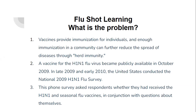So what is flu shot learning? What is the problem? In our dataset, we will take a look at vaccination, a key public health measure used to fight the effect. Vaccines provide immunization for individuals and peoples, and enough immunization in a community can further reduce the spread of diseases through herd immunity. When a vaccine for the H1N1 flu virus became publicly available, the United States conducted a national H1N1 flu survey. Respondents were asked whether they had received the H1N1 and seasonal flu vaccines, with additional questions covering their social, economic background and opinions on risk of these illnesses.